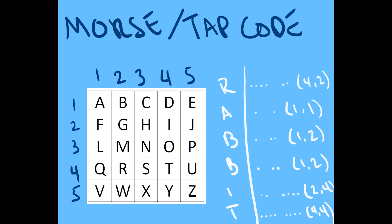In order to encode a message — and this is how the prisoners learned it — you tap the row number first, either one through five depending on what letter you're trying to get across, then followed by the column number. So let's say you wanted to tap out 'run': you tap four-one, two-three, four-one-two — that's your R. Then U would be four-five, and N is three-three. So the coordinates of the letters — for R you'd tap four times, a short pause, then two times, then another short pause before the next letter.